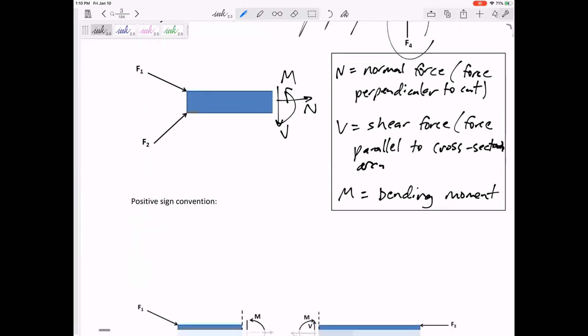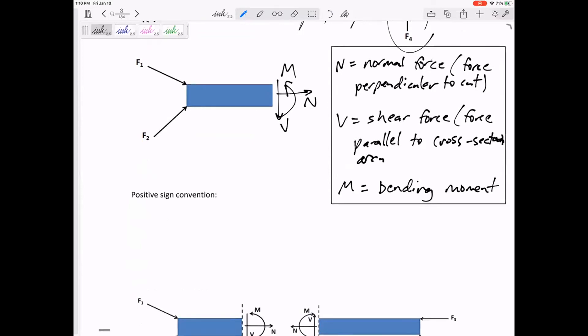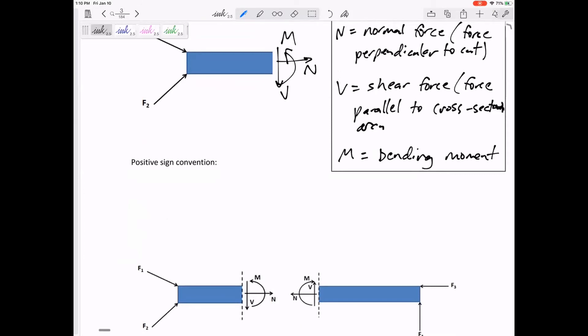For 2D, I want you to use positive sign convention. It's equal and opposite whether you keep the right half or the left half. But N is always positive outward—positive N points out of the cut. This would be tension. Positive V would rotate the beam clockwise. Do you see how a force on that side pushing that way would cause a clockwise rotation?